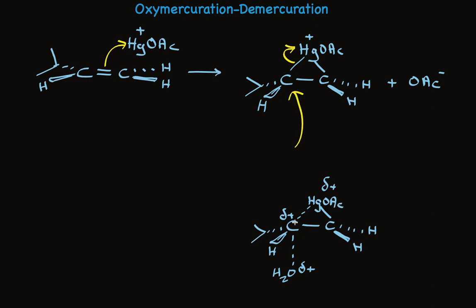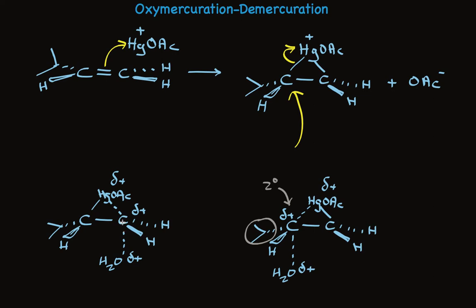We know that alkyl groups stabilize positive charge, so here's an isopropyl group, and this is like a secondary carbocation. The alkyl group makes this more stable, which brings me to comparison with the other possibility. If water were to add to the other carbon, the right-hand carbon would have a partial positive charge with two hydrogens attached rather than an alkyl group, so it would be less stable — like having a primary carbocation. So this transition state is less stable, the activation energy barrier is greater, the reaction is slower, and this leads to the regioselectivity we observe, where water adds to the more substituted carbon.